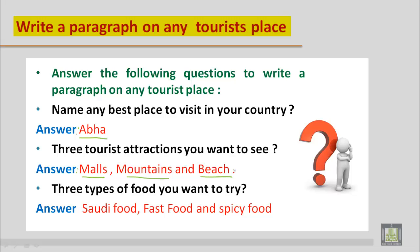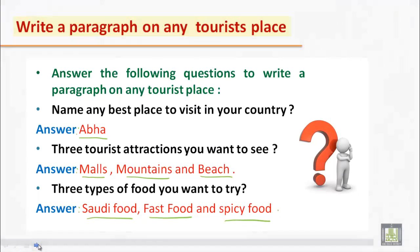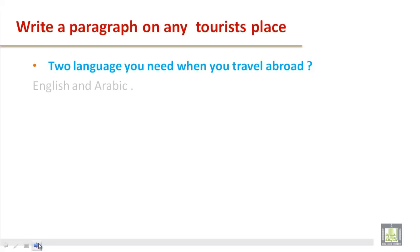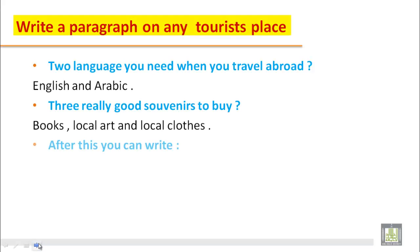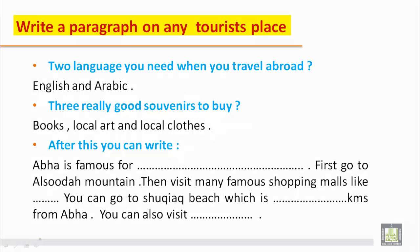The next question related to tourist places you can ask is: name three types of food you want to try. You can give the answer as Saudi food, fast food, and spicy food. This is how you will build ideas about any tourist place.